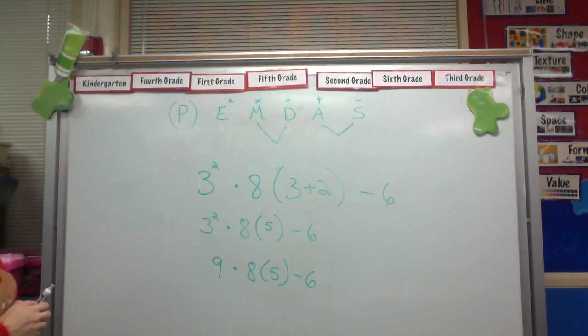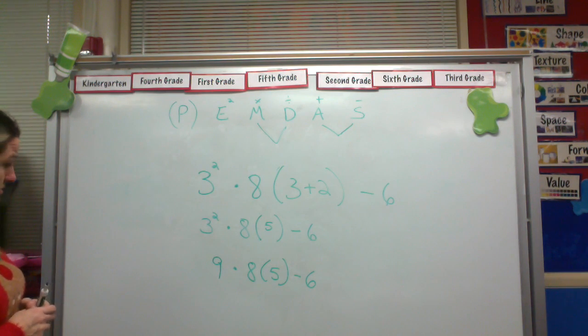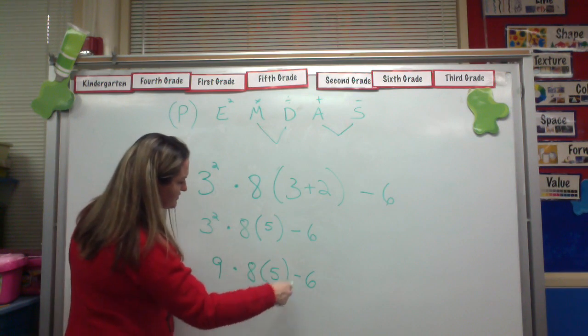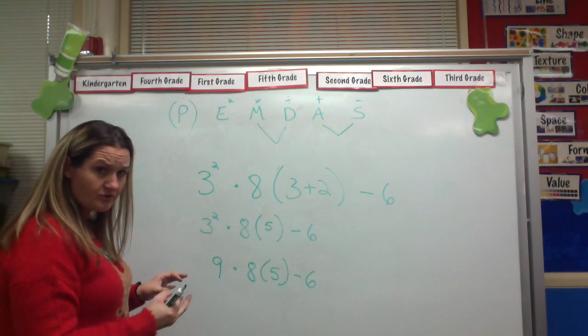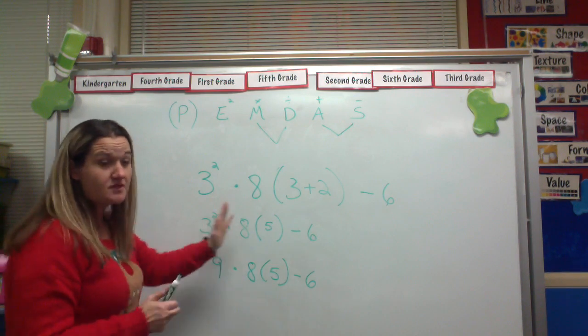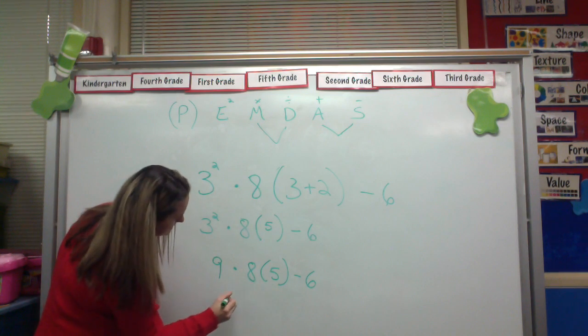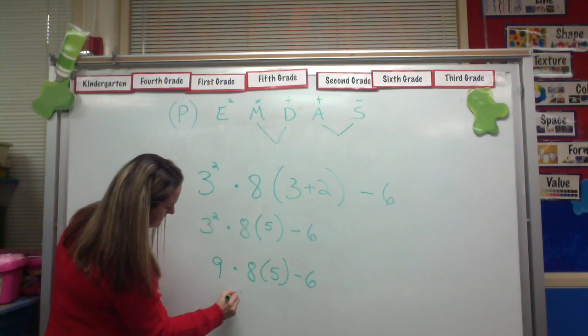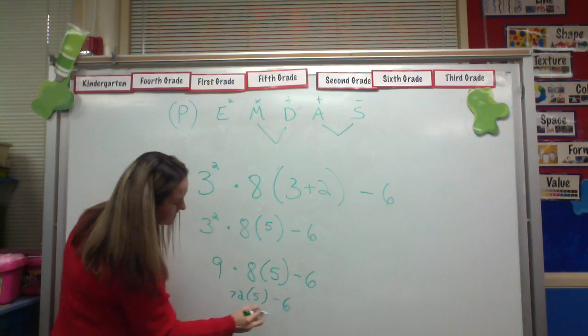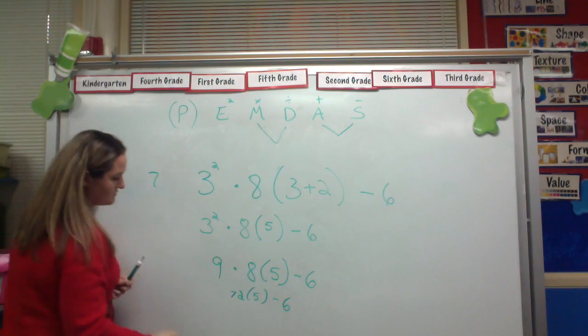All right, then the next step, multiplication or division. Do I have either of those going on? Yeah, I've actually got to multiply in a couple of spots, don't I? So here I've got 9 times 8. Here I've got 8 times 5. Which one do I do first? I multiply. I do left to right. So in this case, I'm going to do 9 times 8. So that's 72 times 5 minus 6. Now I still have some more multiplying to do.